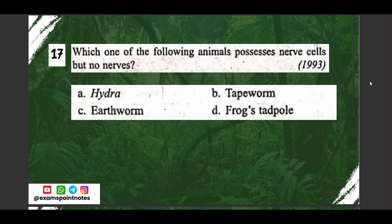Question number seventeen: which one of the following animals possesses nerve cells but no nerves? Options are: A) Hydra, B) tapeworm, C) earthworm, D) frog tadpoles. The correct answer is option A, Hydra.